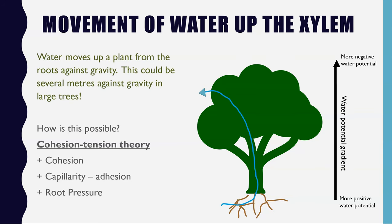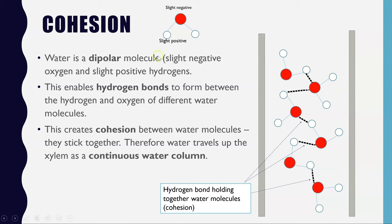Starting with cohesion, we need to think back to biological molecules and the structure of water. Water is dipolar, meaning it has a slight negative charge on the oxygen and a slight positive charge on the two hydrogens. Because of these two different charge regions, water molecules are able to form hydrogen bonds with each other, occurring between the hydrogen of one molecule and the oxygen of another.